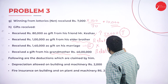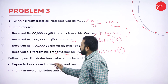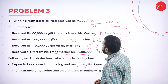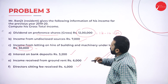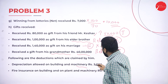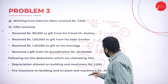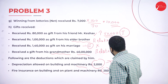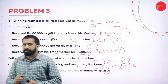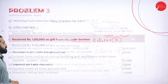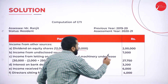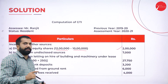Now for the deductions: for income from letting on hire of building and machinery under lease of 30,000, depreciation is 2,000 and insurance is 250, totaling 2,250 to be deducted. So the net taxable amount from letting is 27,750.